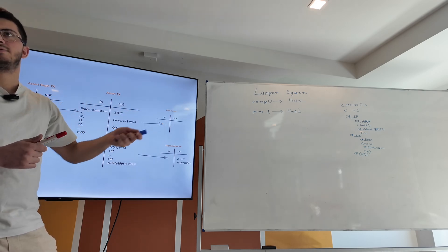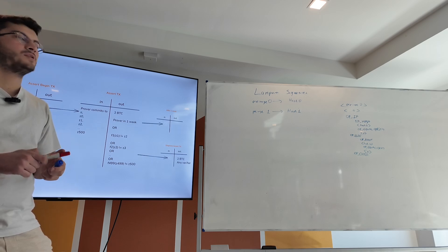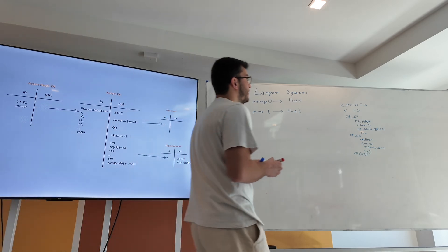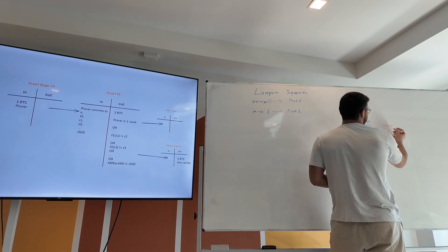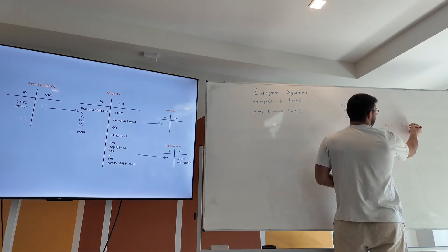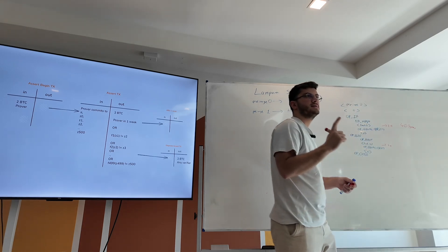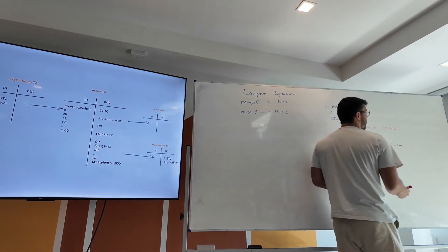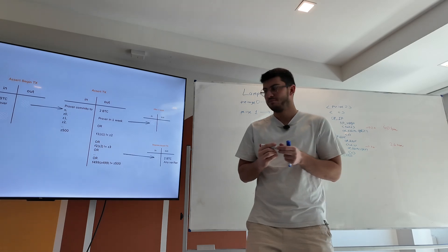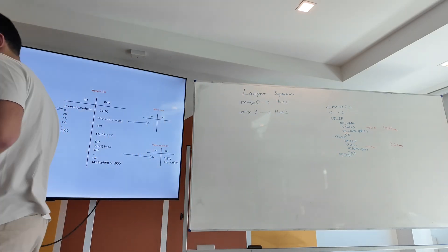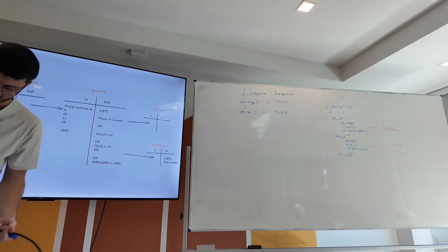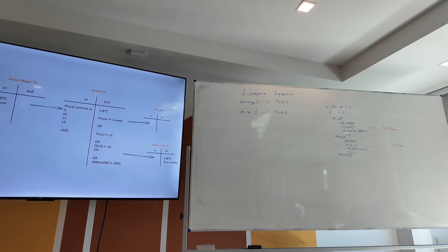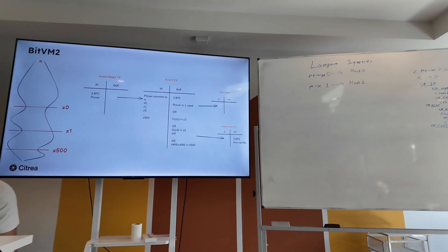The advanced version of this is Winternitz signatures, which are more compact in terms of Bitcoin script. Lamport takes at least 40 bytes to verify a single bit — 20 bytes for each hash. With Winternitz we can get down to about 26 bytes per bit. This is our primitive to verify a SNARK proof on Bitcoin, and now we can build a bridge on top of it.